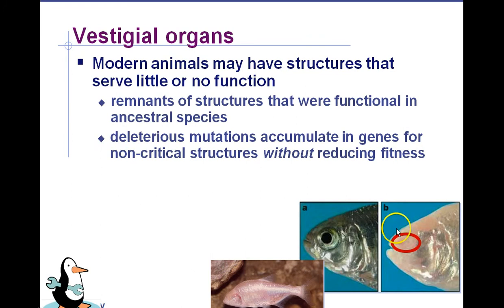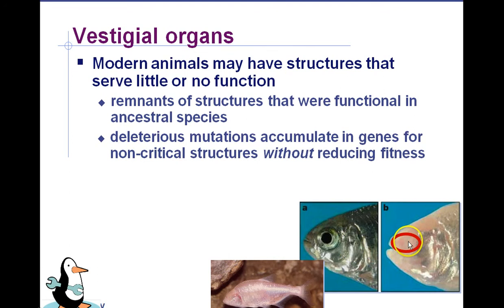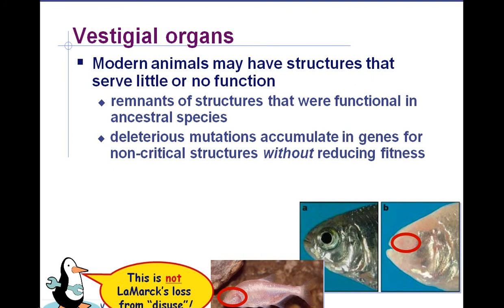Here we have the lost eyes of the blind cave fish — vestigial eyes. You still have the indentation where the eyes were. The blind cave fish lives in caves, and in a cave there's no light, so there's no survival advantage to having eyes. We're not making Lamarckian statements here — we're not saying the fish didn't use their eyes so they just disappeared. What we're saying is that mutations that destroyed the proteins to make an eyeball did not have a negative effect on the fish's survival. So any mutations resulting in the eye not forming are still passed on because they don't reduce fitness or the ability to survive and reproduce. It's not just due to disuse — it's due to mutations that didn't affect the organism's survival or reproduction.